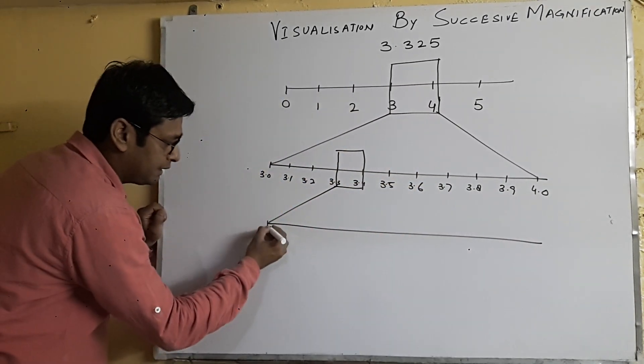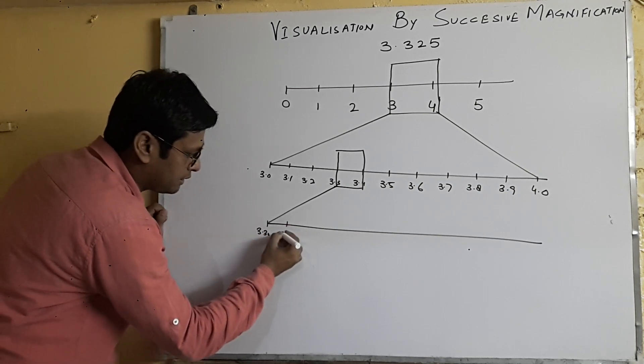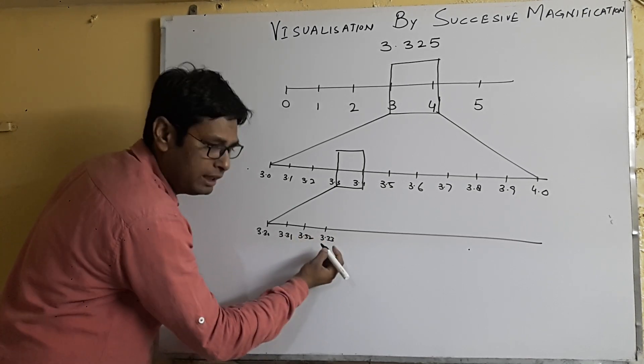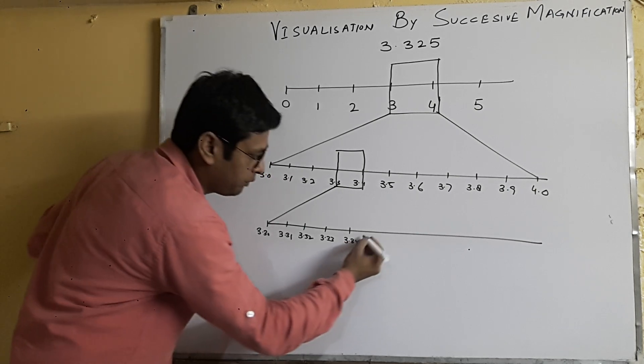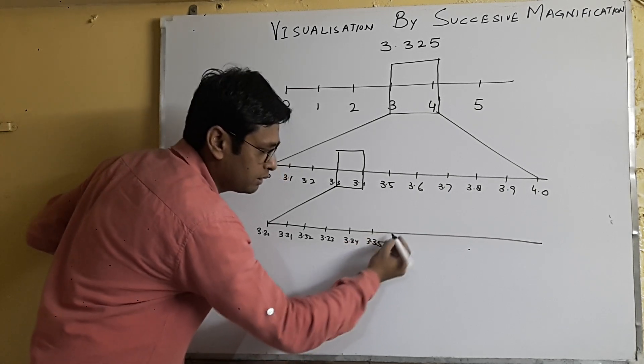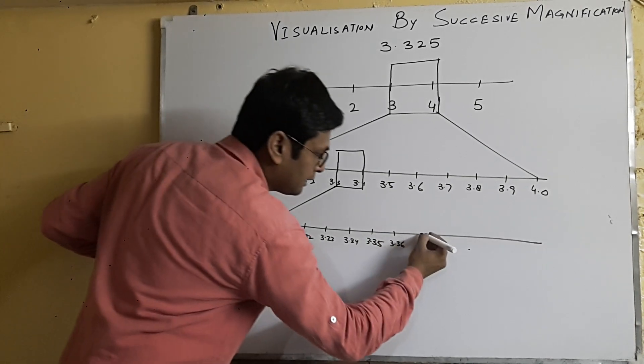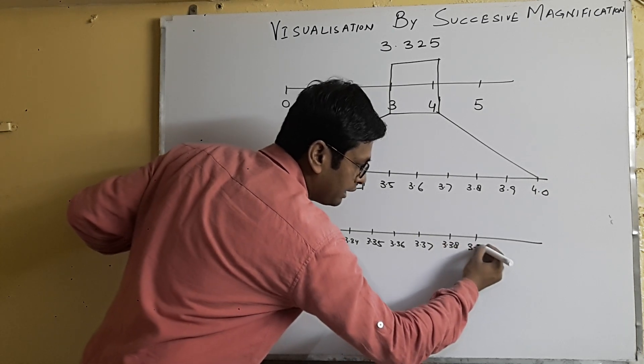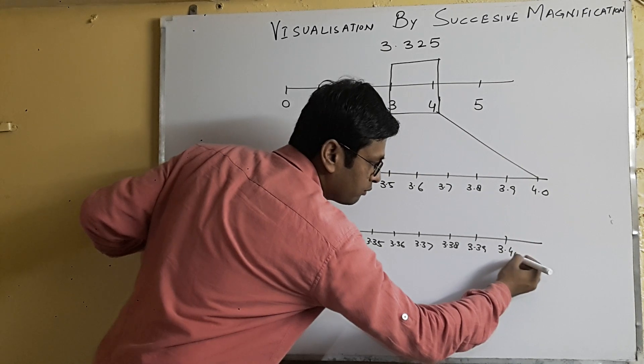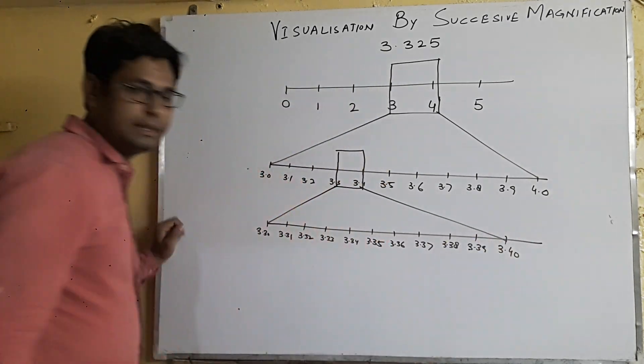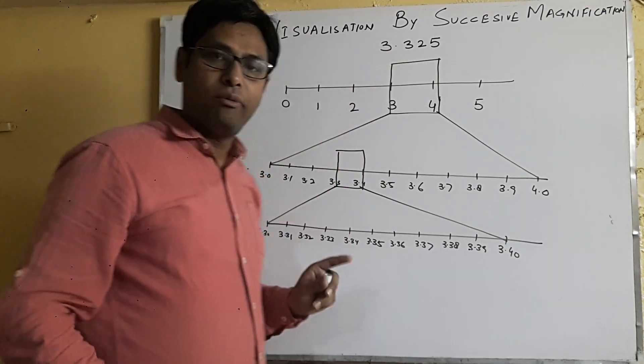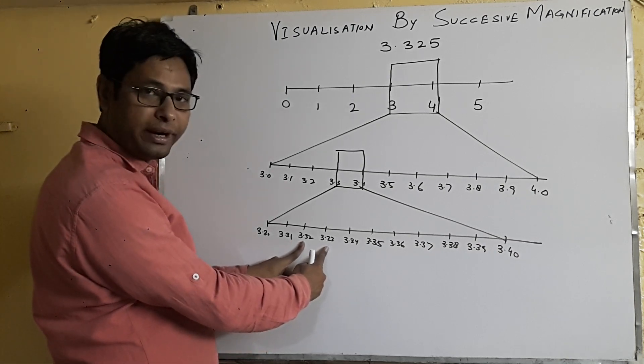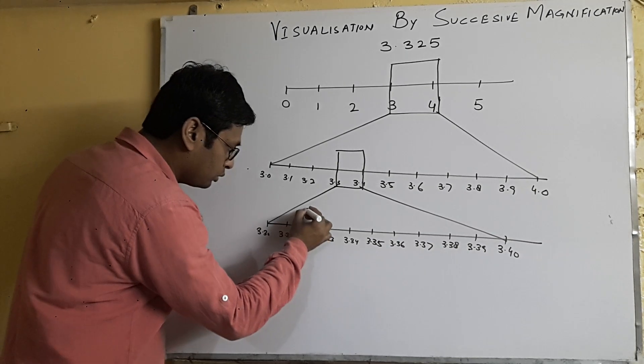And now I will write: it's 3.30, 3.31, 3.32, 3.33, 3.34, 3.35, 3.36, 3.37, 3.38, 3.39, and 3.40. You can see this. Now 3.325 will lie between 3.32 to 3.33, so now I am going to magnify this area.